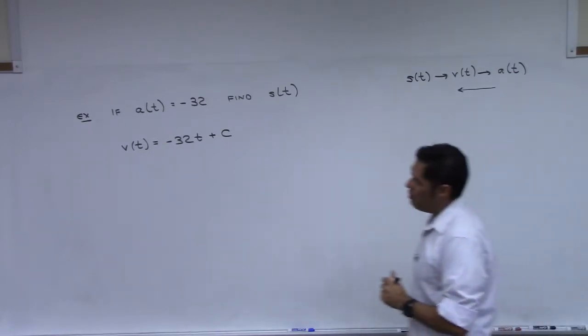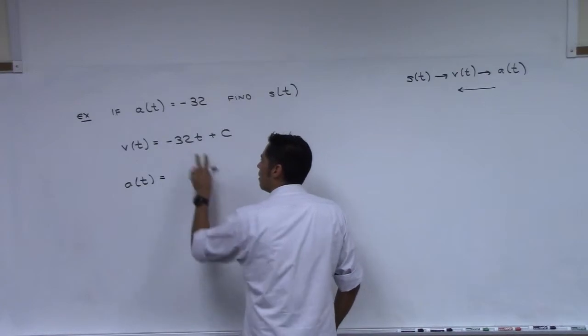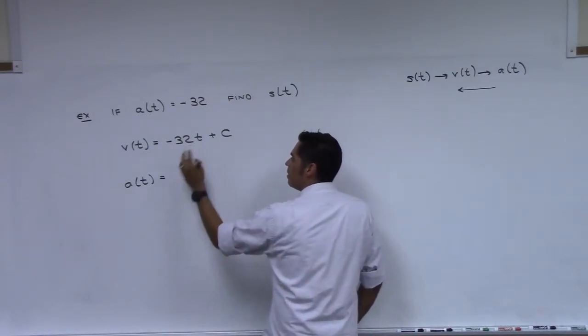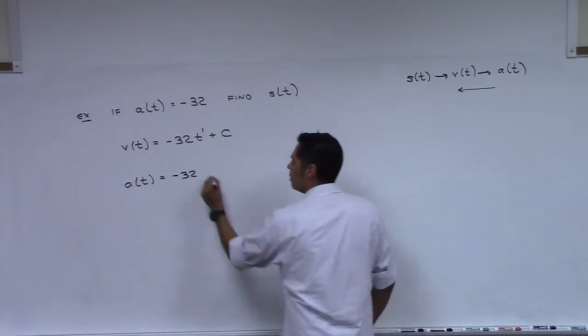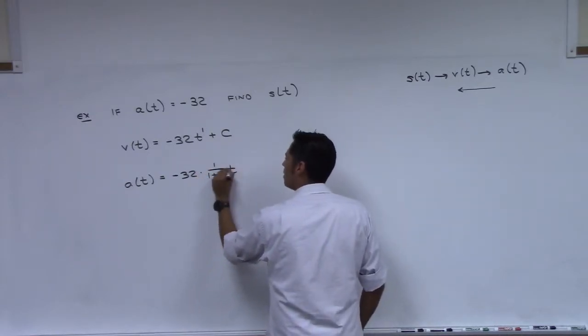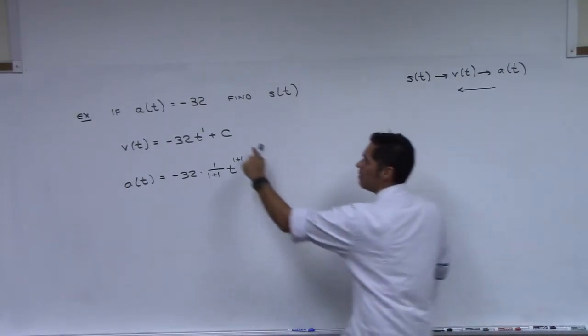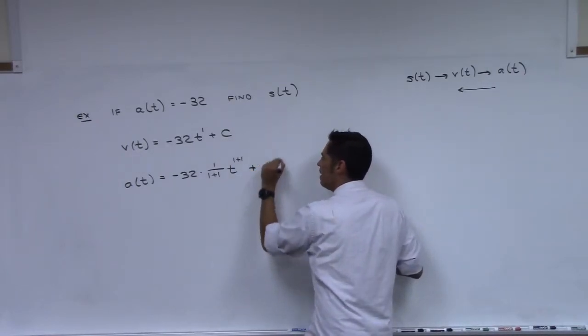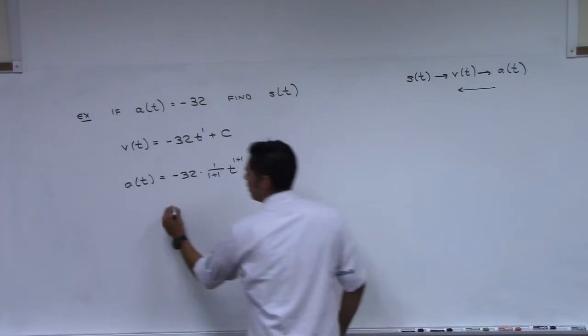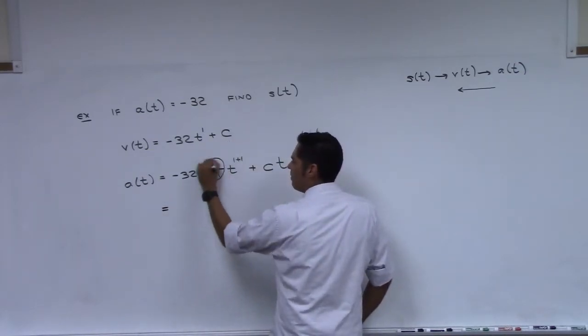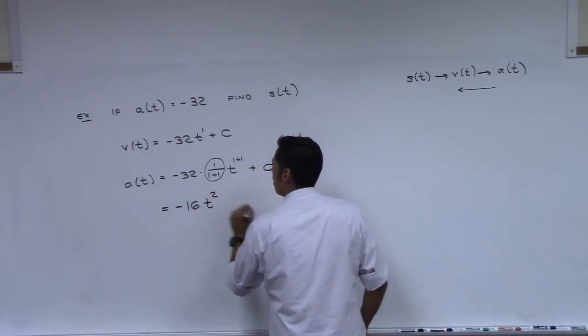And then if we want to go back again to get s of t, then can you take the antiderivative of negative 32 t? So it'll be negative 32. What's the power on this one? It's t to the first power. So we're using power rule. Times one over one plus one t to the one plus one. That's one half t squared. But what about the antiderivative of c? Ct, right? Some constant times t. Hold on. This is one half, isn't it? And half of that is negative 16 t squared. Oh wait, I didn't add the constant.